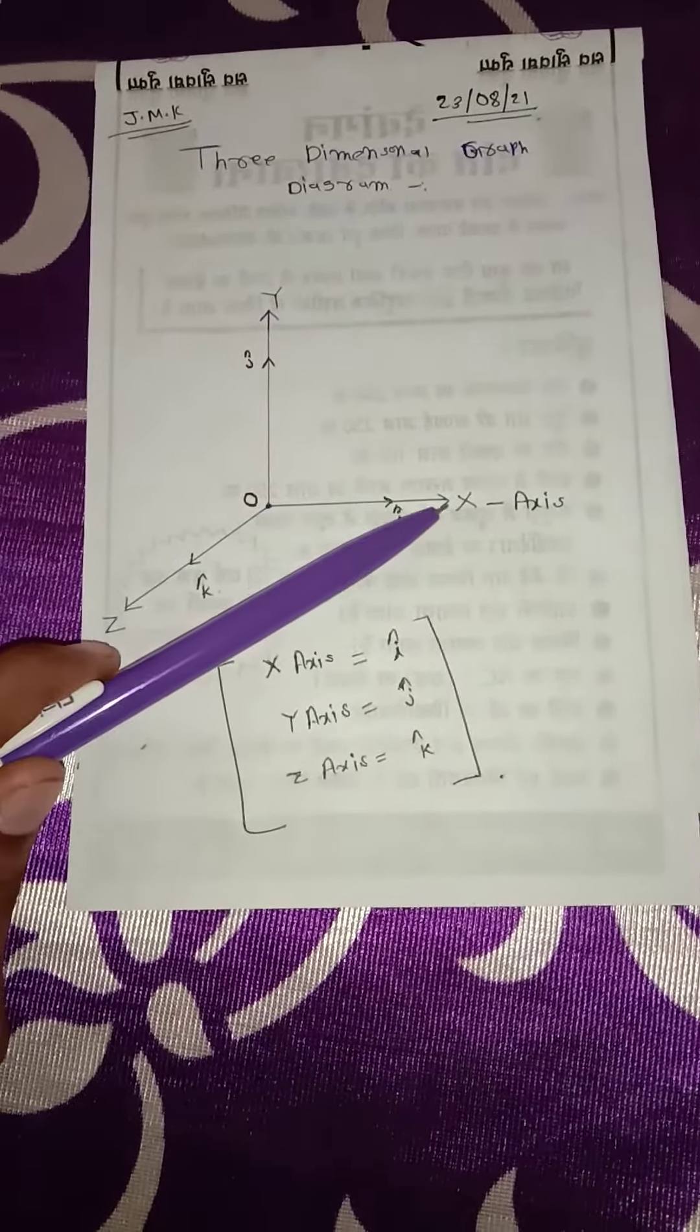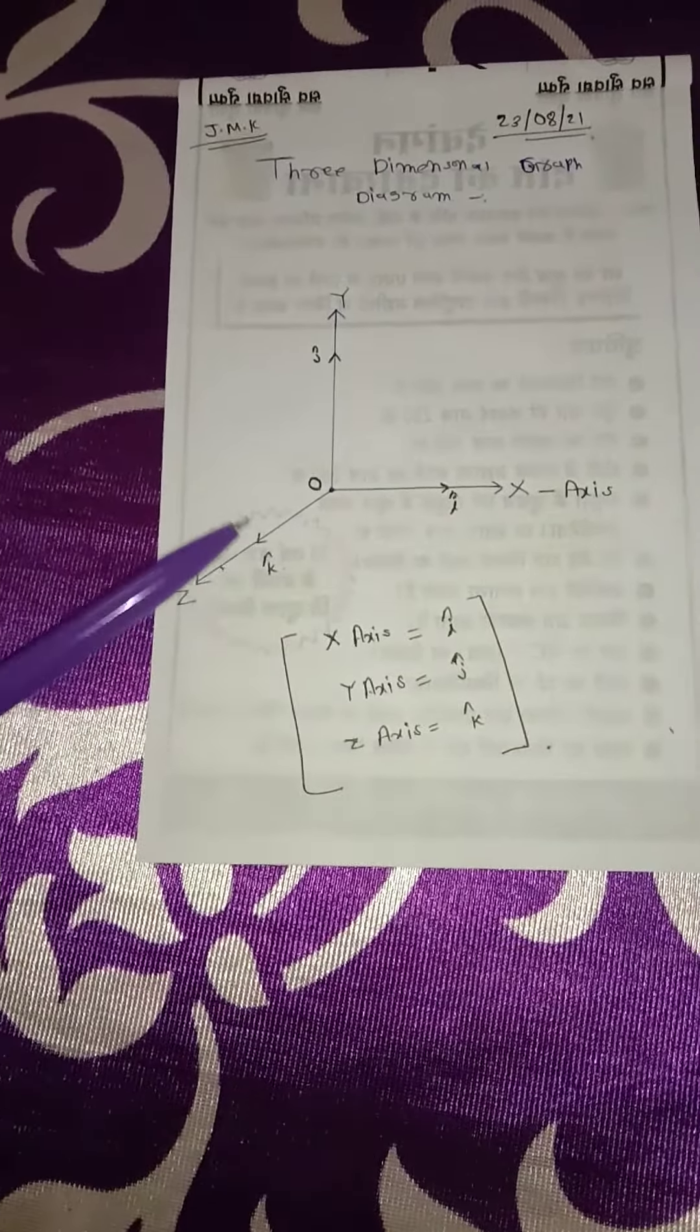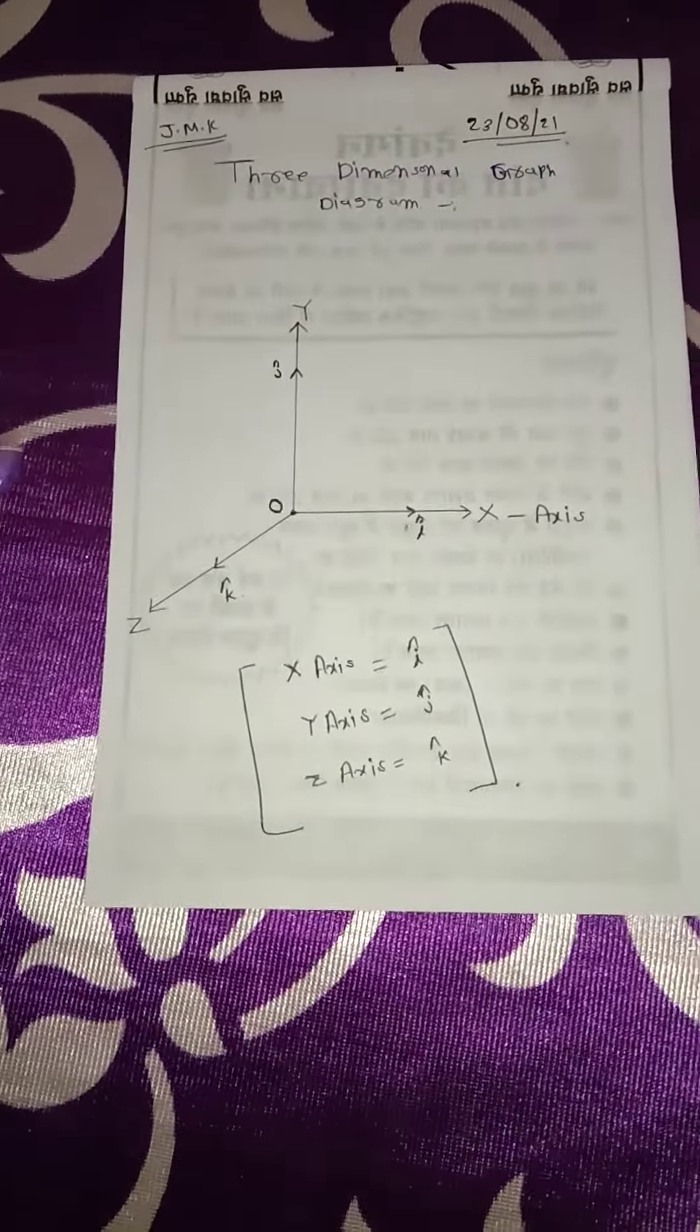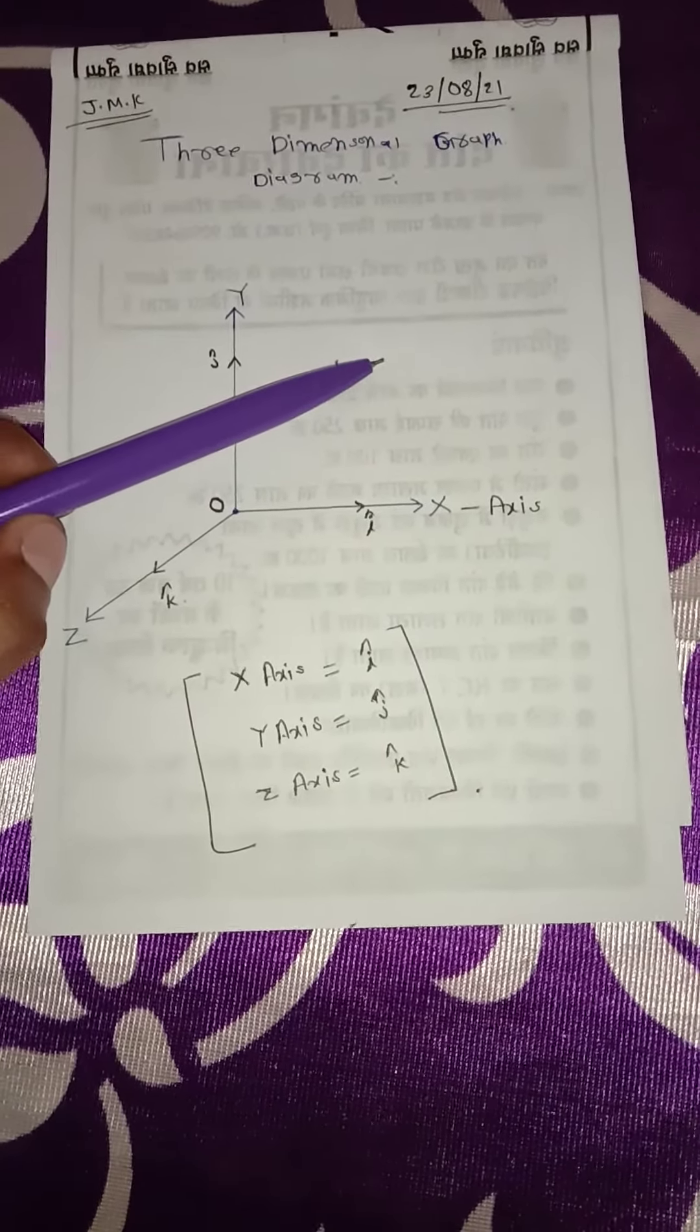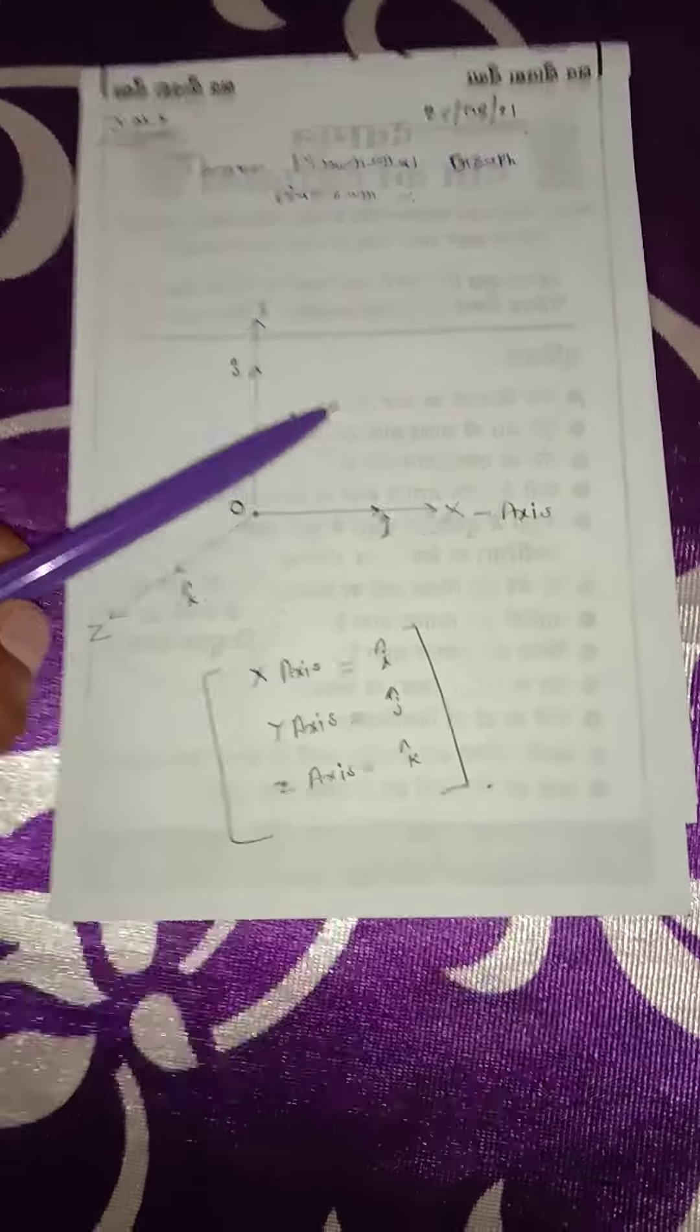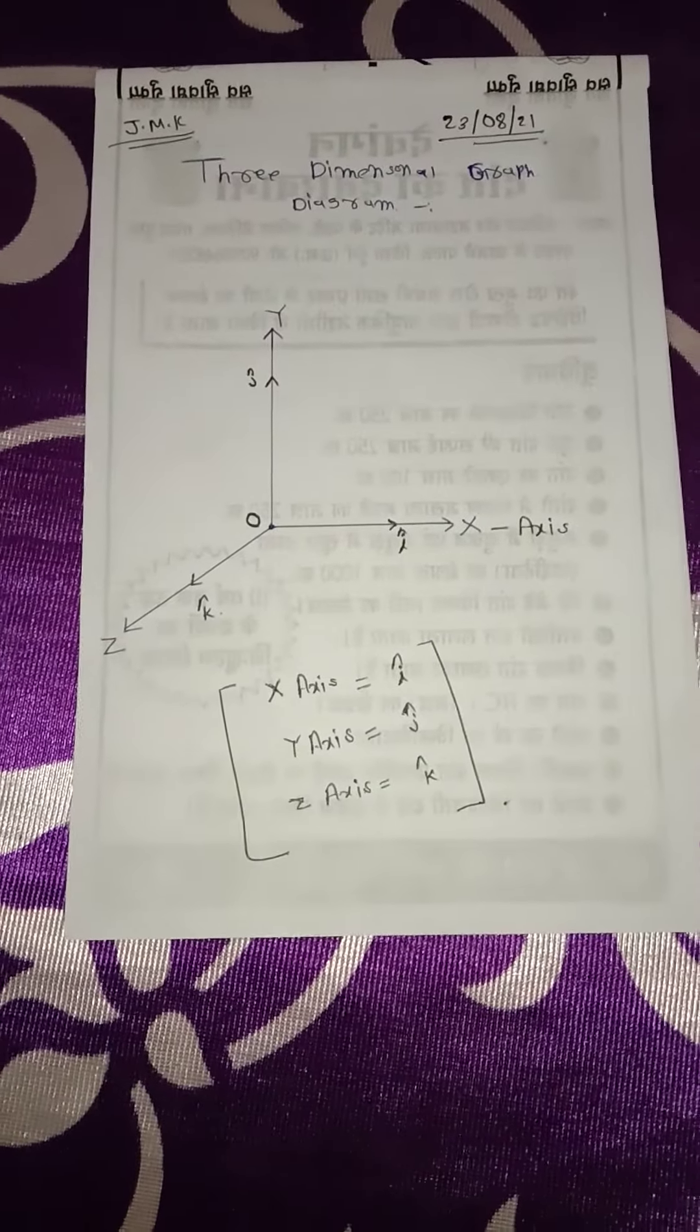This is the x, this is the y. Not z—z is only for three-dimensional graph. And other things: the vector form, O is perpendicular. Draw this thing—vector r, with r cos theta horizontal and vertical components.